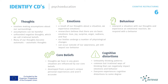As a result of our thoughts about a situation, we experience emotions. Some researchers believe that there are six basic emotions, which can occur at varying levels of intensity and combinations to create the wide range of feelings we recognize. The basic emotions are: love, joy, surprise, anger, sadness and fear.